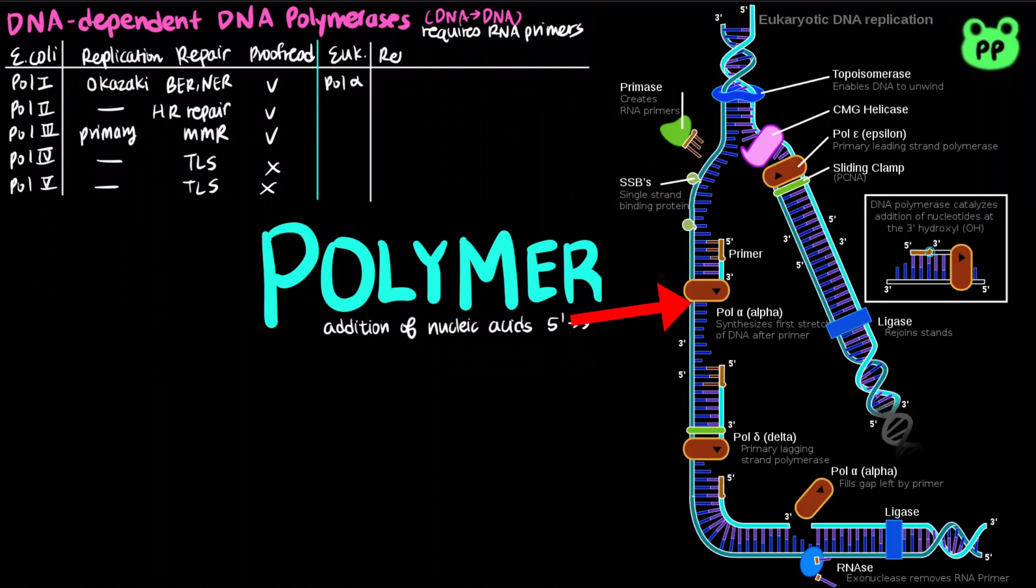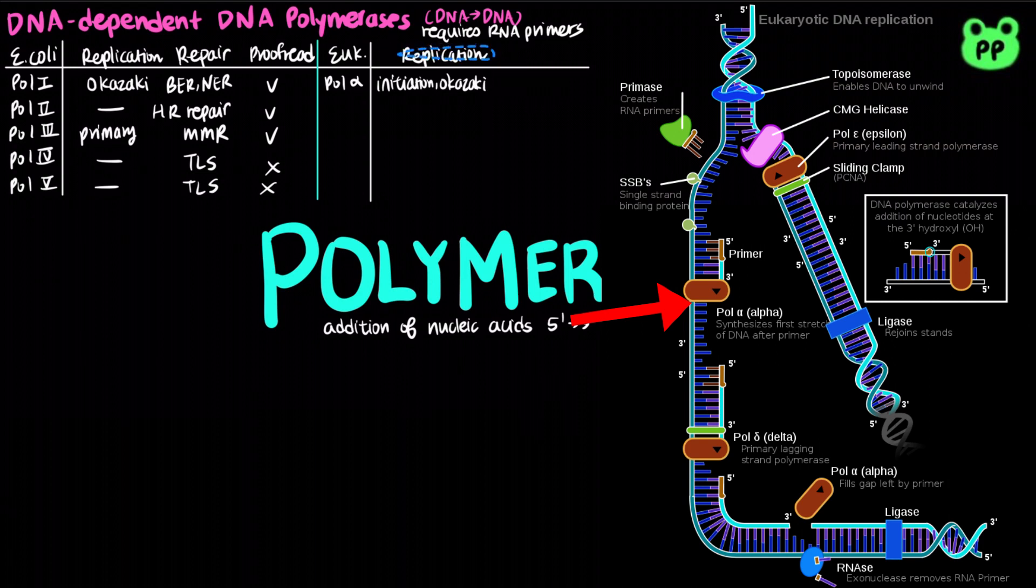DNA polymerase alpha is involved in the initiation of DNA replication, as well as processing of Okazaki fragments. It lacks proofreading activity.